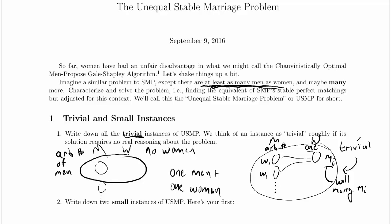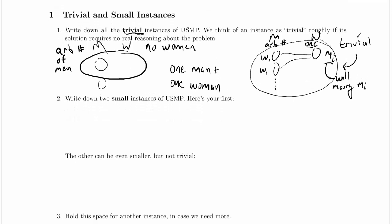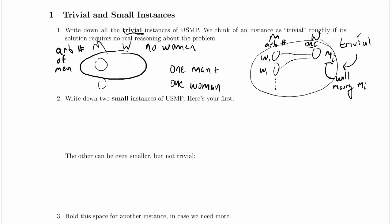We've finished with the trivial instances. Let's scroll down and work on small instances of USMP. So the nice thing about putting together trivial instances, one of the nice things, is that it sets you up to know what a small instance is.